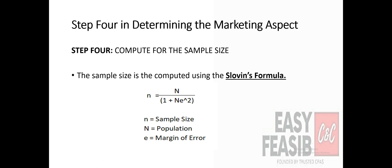We compute it using Slovin's formula. Slovin's formula is: n = N / (1 + Ne²), where small letter n is equal to the sample size, big letter N is equal to the population, and the letter e is equal to the margin of error. The most common margin of error used in getting a sample is 5%, unless you are required to use another percentage.